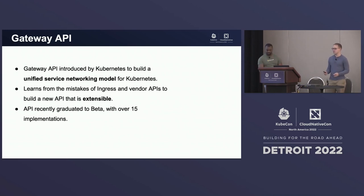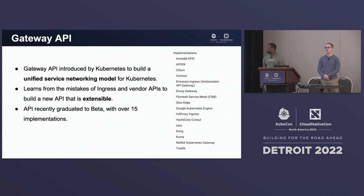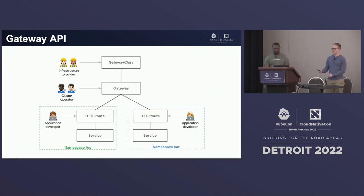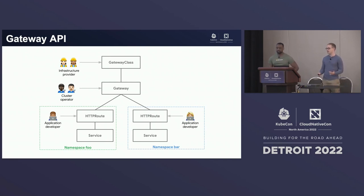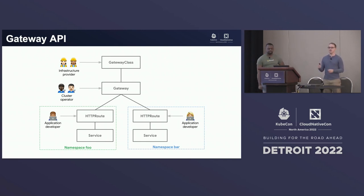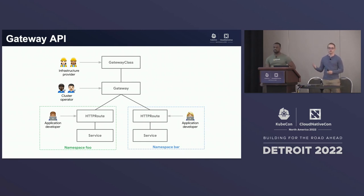This API has been really successful. It recently graduated beta, and there are over 15 implementations. Rather than a single resource like ingress, it's been split up into many different resources for a role-oriented resource model, so different roles can configure different resources, segmented with RBAC. The core resource is gateway — the entry point to your cluster that typically provisions a real load balancer or proxy pod.